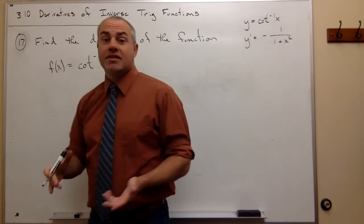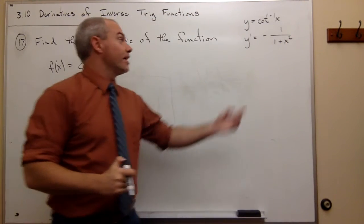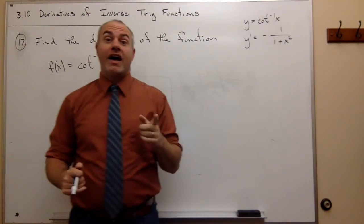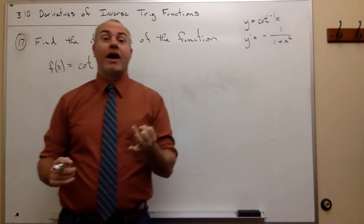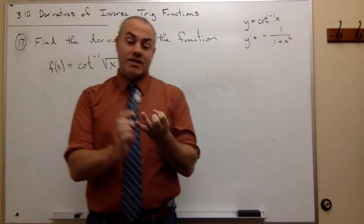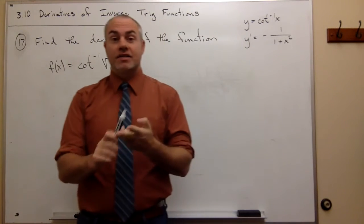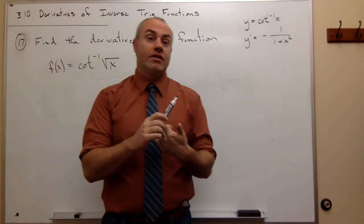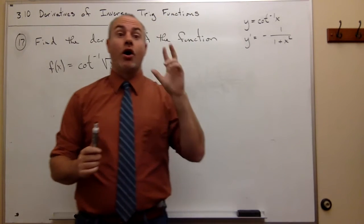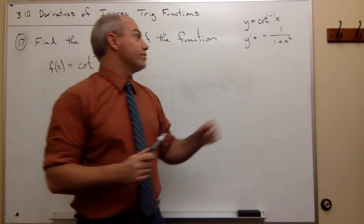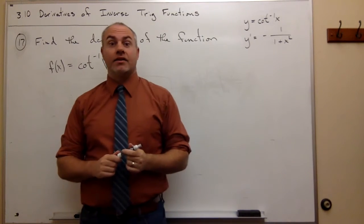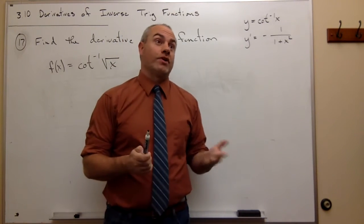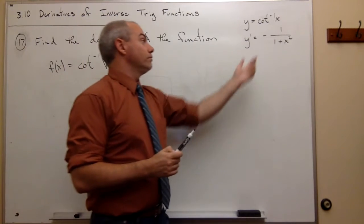So it's exactly the same as tan inverse of x except that I have a negative out in front, and in fact that's true of all the pairs of trig functions: sine and cosine, secant, cosecant, tangent, cotangent. All the co- functions, when you take their derivative you get a negative and all the ones that don't start with co- don't.